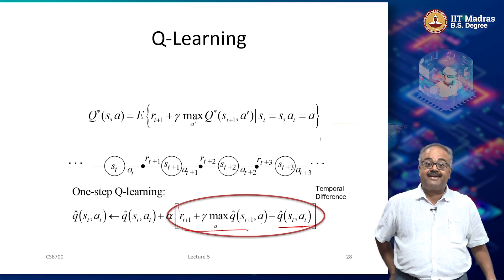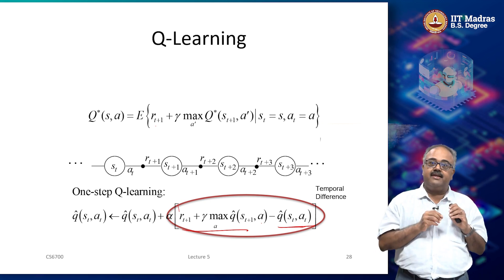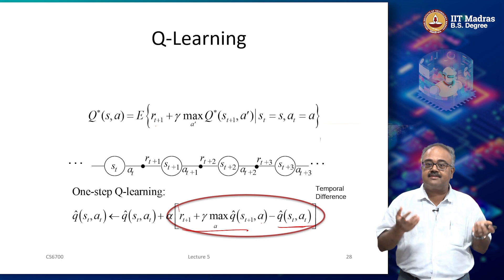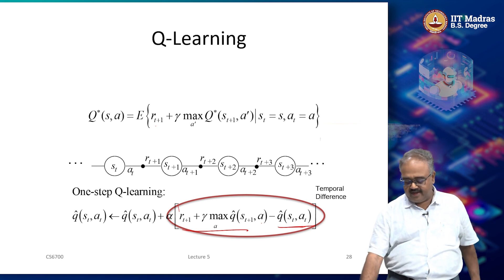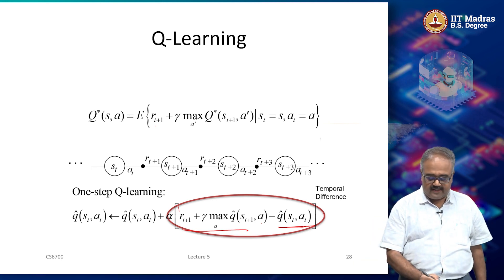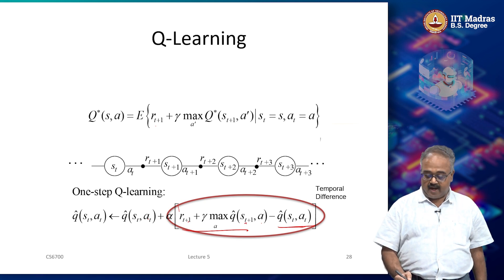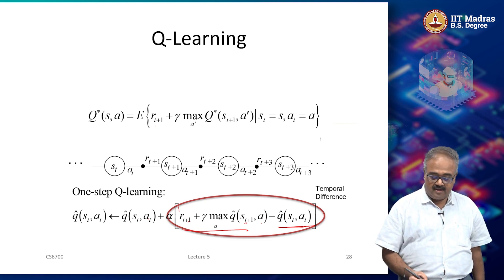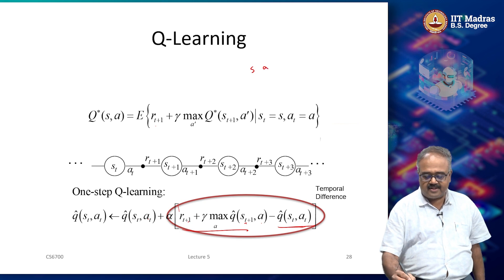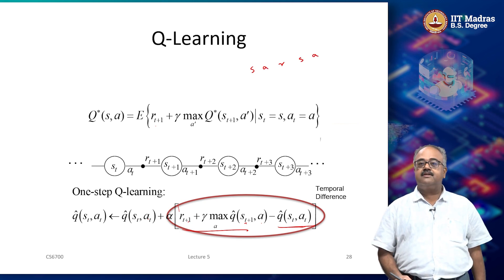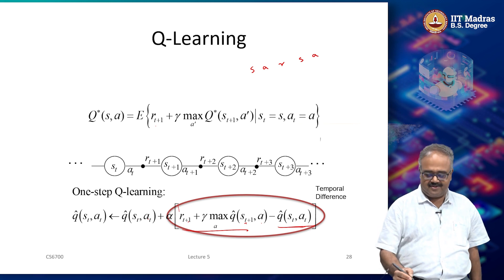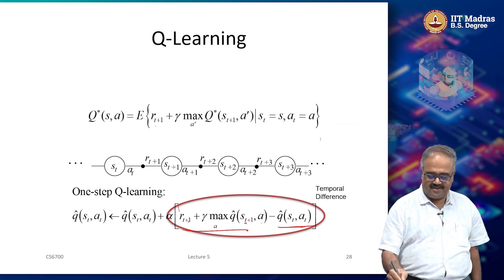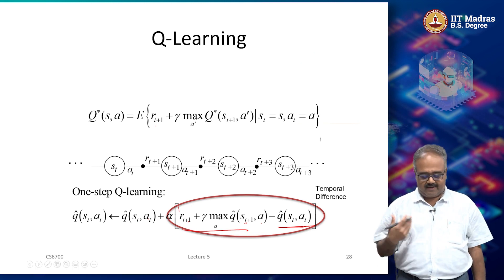This difference is what gives rise to the name SARSA itself. In Q-learning we use only state, action, reward, and next state — we do not use the next action. But in SARSA we use the next action as well: state, action, reward, next state, next action — that gives SARSA. That is really how the name was derived.